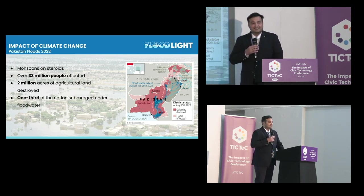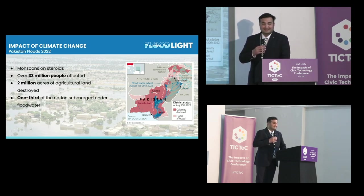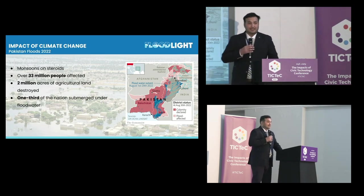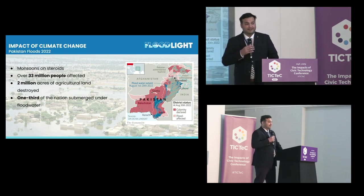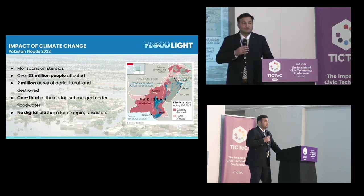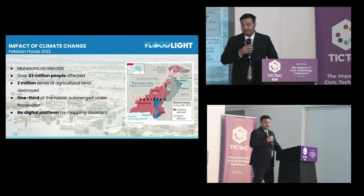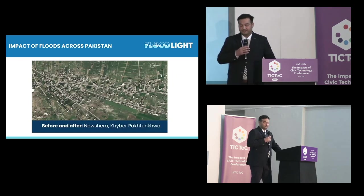An estimated 16 million children were affected, facing homelessness, disease, and malnutrition. Outbreaks of cholera, diarrhea, malaria, and dengue fever due to stagnant water underscored the country's lack of preparation in the face of such a large natural calamity. Over 3,000 human casualties were also reported.